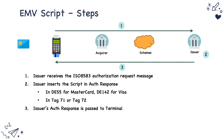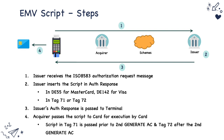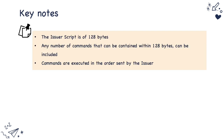The issuer's authorization response is passed back to the terminal, and the acquirer passes the script to the card. If the script is in tag 71, it is provided to the card before the execution of the second Generate AC command. If the issuer script is in tag 72, it is provided after the second Generate AC command. This is how the terminal passes the script it received from the issuer, and the card executes it.